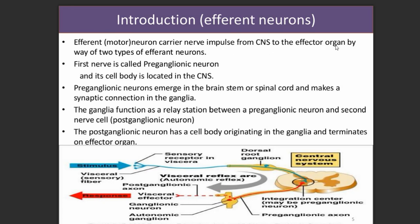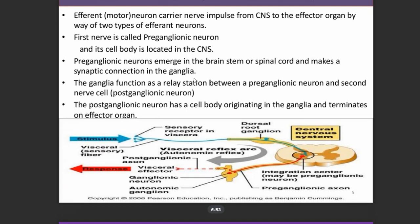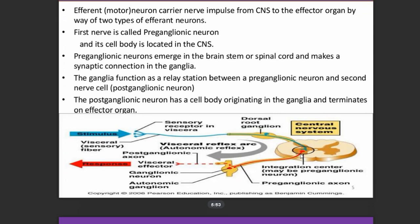From the CNS to the effector organ, there are two types of efferent neurons. The first is the preganglionic neuron, whose cell body is located in the CNS. The axon arises from the cell body of the preganglionic neuron, and the preganglionic fibers travel to the ganglion. These fibers emerge in the brainstem or spinal cord and make a synaptic connection in the ganglia.